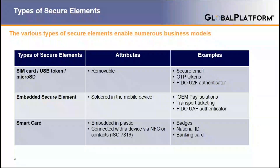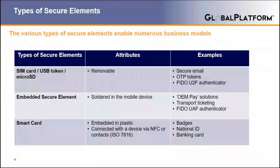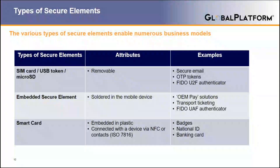The last type of secure element is a smart card. What makes it different is that a smart card has a plastic body and can be connected with a main device either via NFC contactless solution or with a contact solution. This is where you will find corporate badges — so when you want to connect to your intranet, you might use your badge. You have national IDs in this form factor, which can also be used to access e-government services, and banking cards of course have this kind of format.